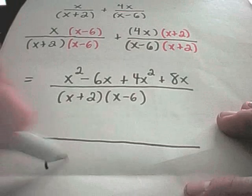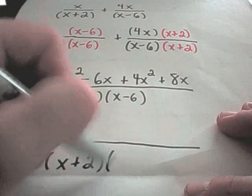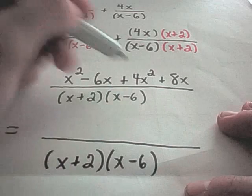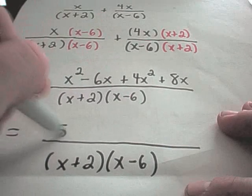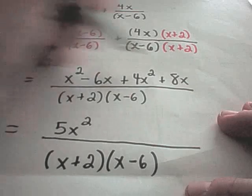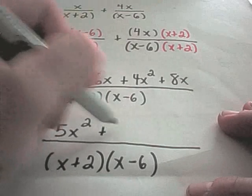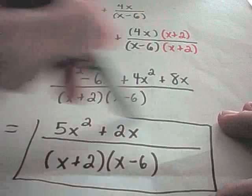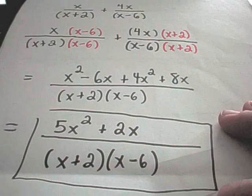And the last thing I'm going to do here is simply collect my like terms in the numerator. So again, I'm not going to do anything to the bottom. I'm just going to write it as x plus 2, x minus 6. I have a positive x squared, a positive 4x squared. That'll give me positive 5x squared. I have a negative 6x, a positive 8x. That'll give me a positive 2x. And that would be considered the simplified version of the original expression.